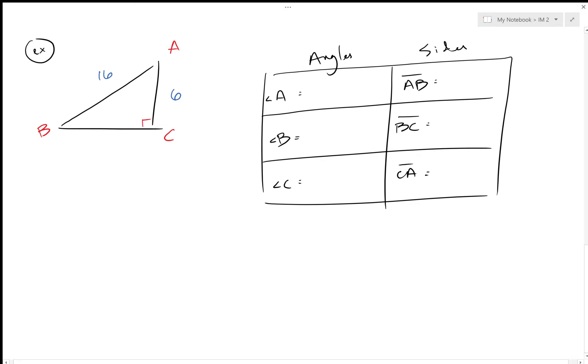We're always given three things and we need to find three things. The three things that we're given are the 6, the 16, and the 90. So 16 is AB, the 6 is AC or CA, and then the 90 degree angle again is the C.